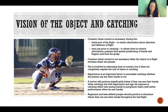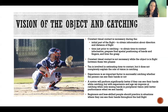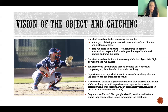Constant visual contact is necessary during two parts of the flight of the object. The first is the initial part of the flight — when the ball is thrown, or whatever the object is, when it first begins to move.